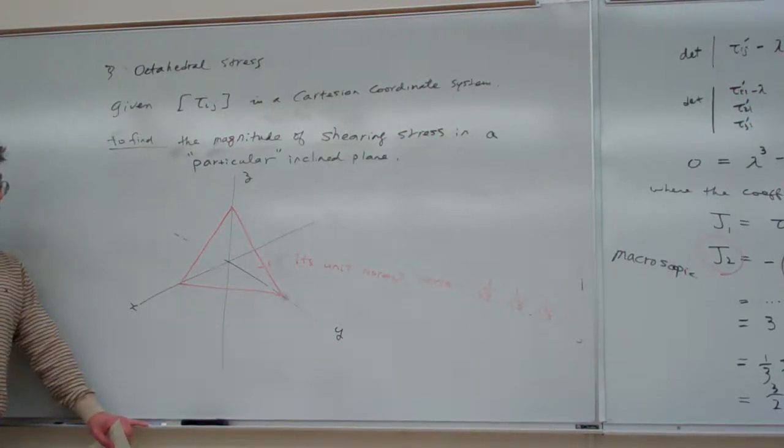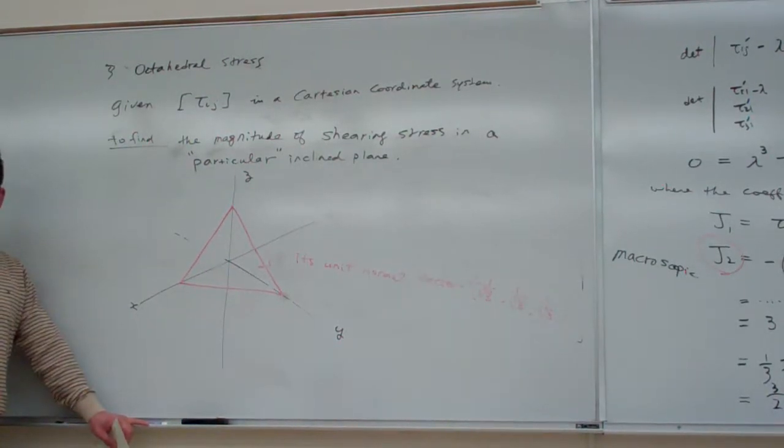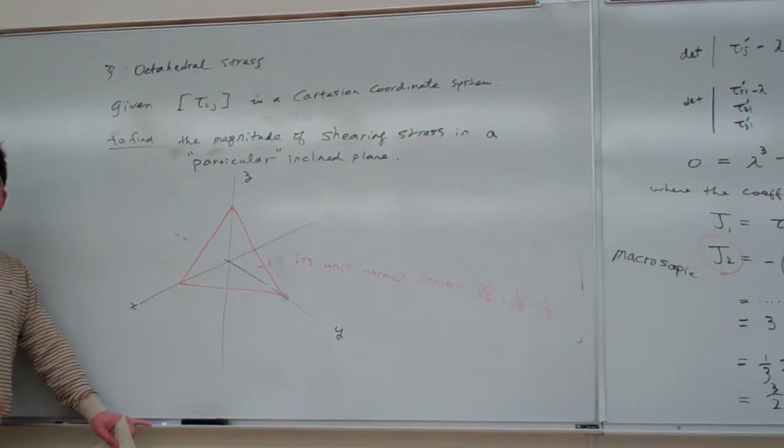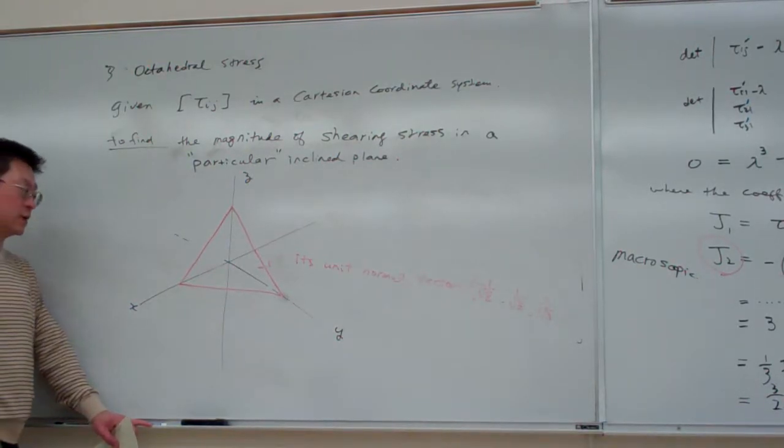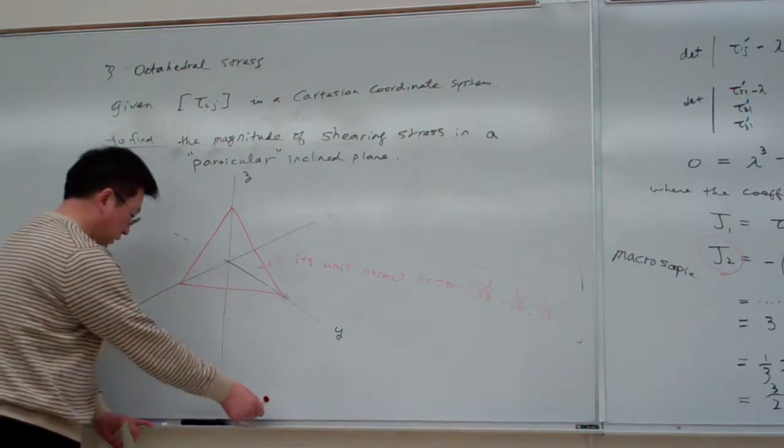The normal vector equals (1/√3, 1/√3, 1/√3). This is the particular inclined plane we choose — we just choose it — and we choose such a particular orientation.